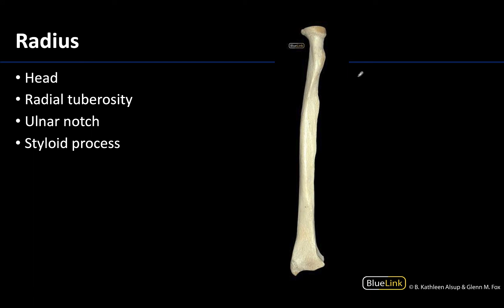Now looking at the radius, the proximal end is up here and the distal end increases in size distally — we are looking at a straight anterior view. There is a very distinct head of the radius at the proximal end. Unlike the ulna whose head is distal, the head of the radius is proximal and has a button-like shape. Its superior portion is smooth because it articulates with the capitulum of the humerus, and the periphery of the head rotates around that radial notch of the ulna.